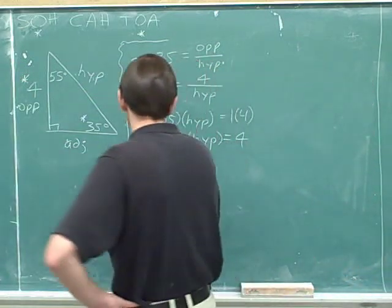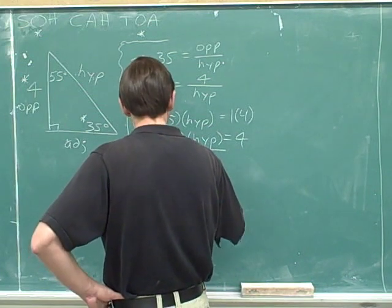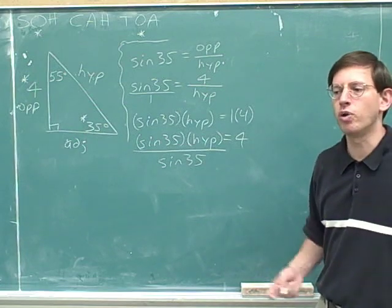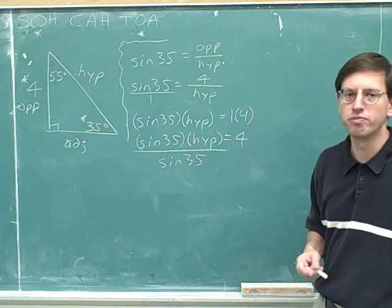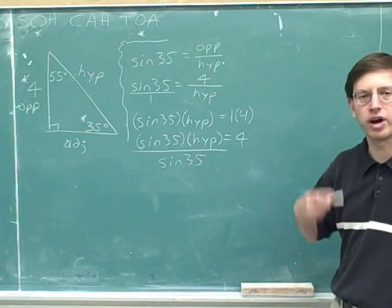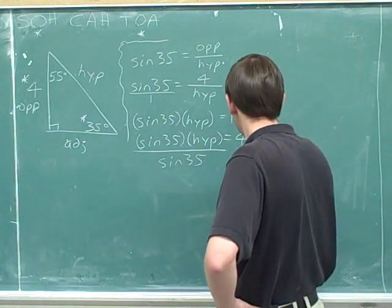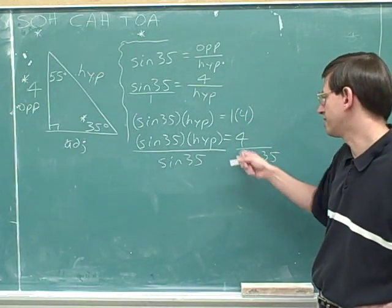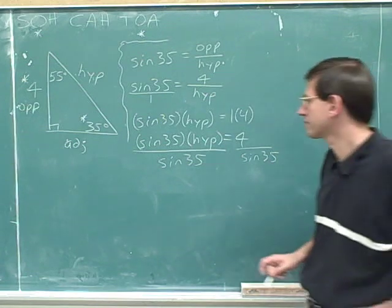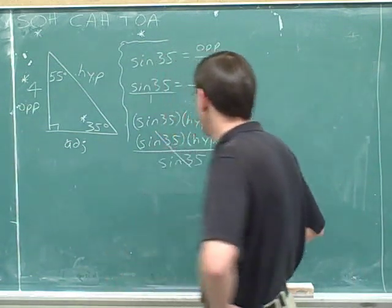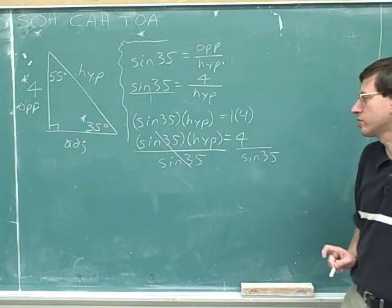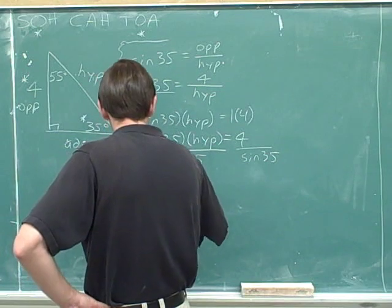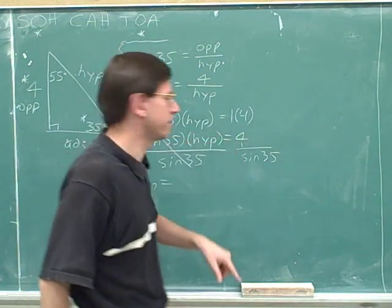The golden rule of algebra says if you divide one side by sine of 35, you must divide the other side by sine of 35 as well. The sine of 35 terms cancel on the left-hand side — that was the whole reason it was a good idea to divide by sine of 35. We're left with hypotenuse equals 4 divided by sine of 35.